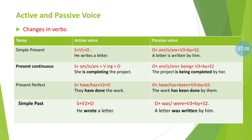Out of the 12 types of tenses, only 8 can be transferred from active to passive. Present perfect continuous tense, past perfect continuous tense, future continuous tense, and future perfect continuous tense cannot be changed from active to passive, because we do not have a supportive or extra helping verb while transforming those sentences.